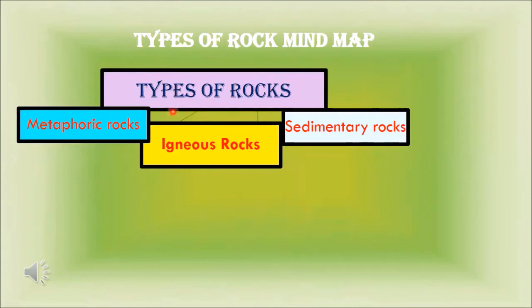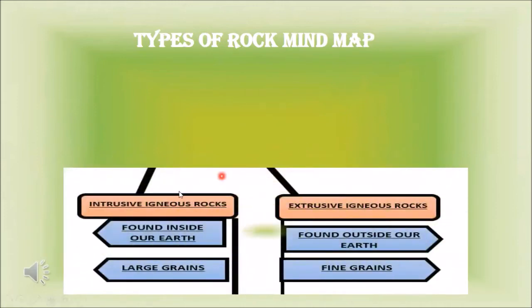Today we will see the different kinds of rocks available near us. There are three types of rocks: igneous rocks, metamorphic rocks, and sedimentary rocks. We will also see further categorization of igneous rocks — intrusive igneous rocks and extrusive igneous rocks — and how we can differentiate between all these types.